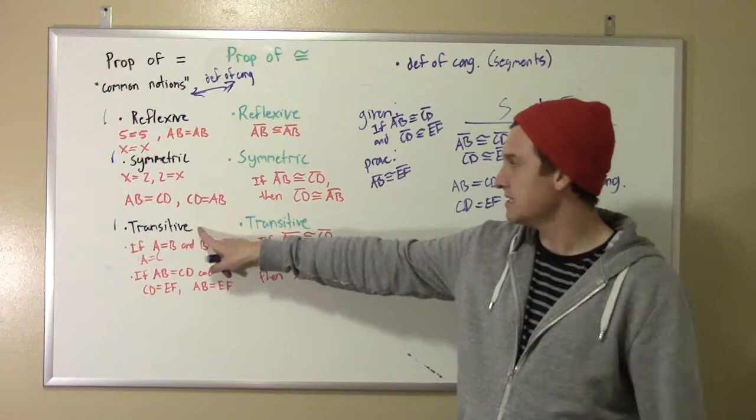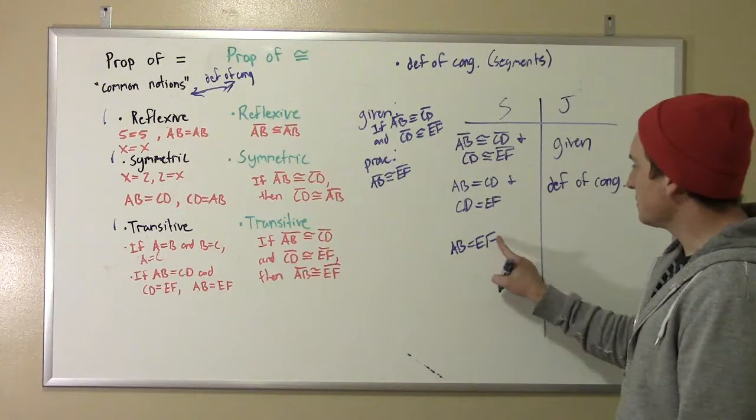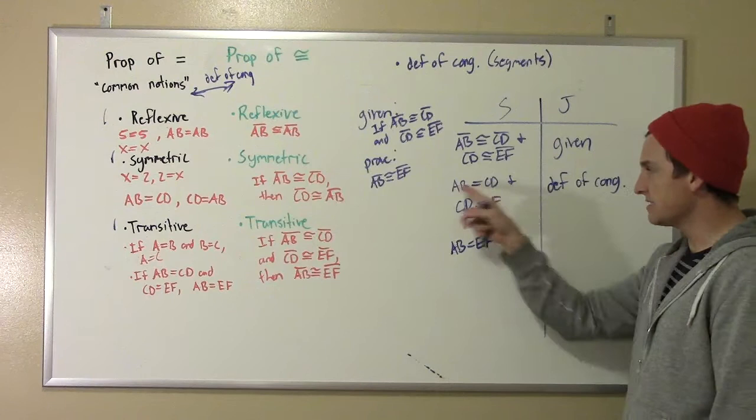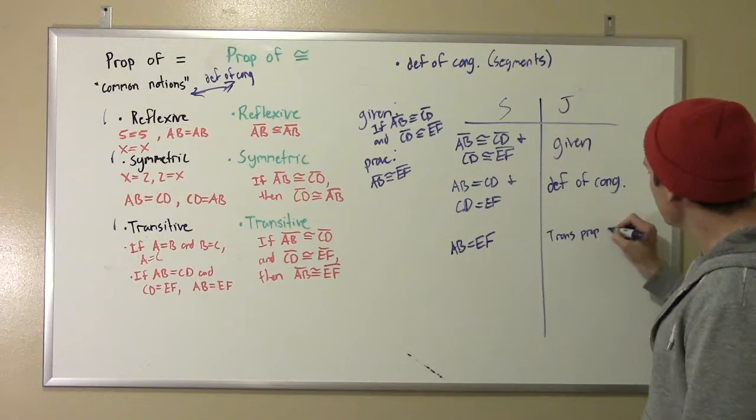We're saying this is a common notion, or this is an obvious statement about equality that we can all kind of get behind, because we're familiar with how equality works and things like that. So this is the statement that comes from this statement, and that's the transitive property of equality.